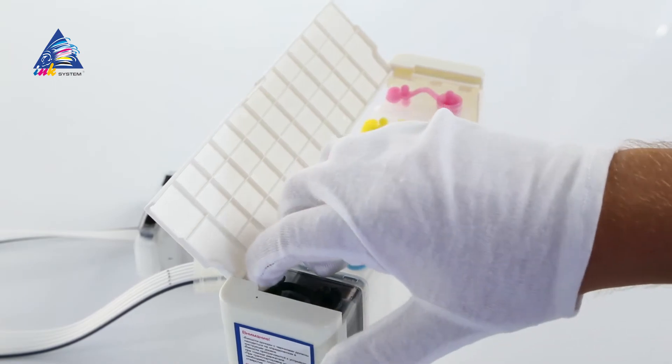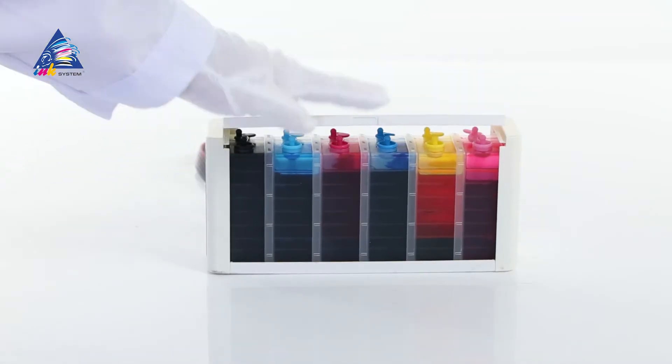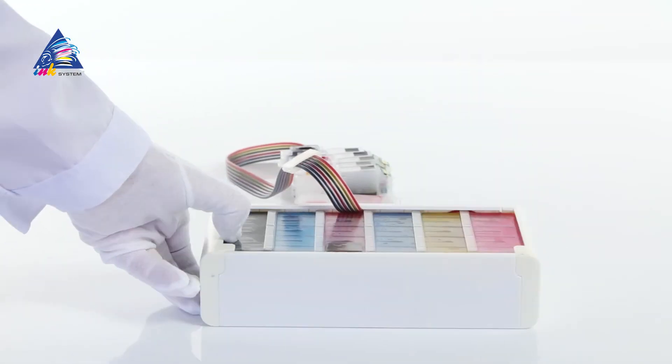Close all the openings tightly and pull the dampener containers of the main ink reservoir. Leave the containers in this position for approximately one minute. This way, the dampener is filled with ink.